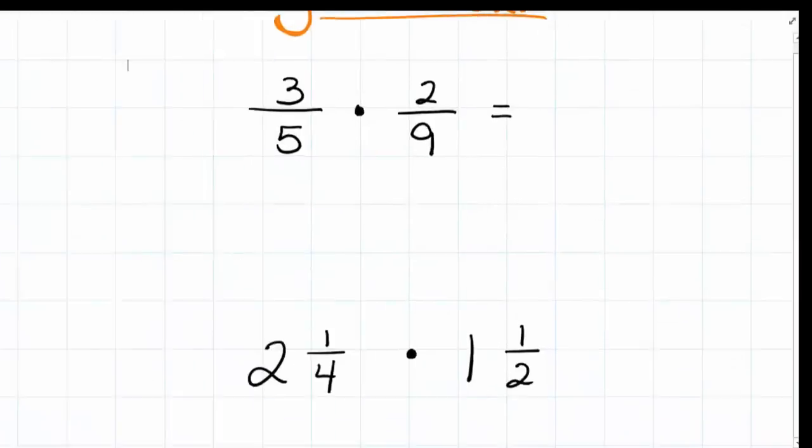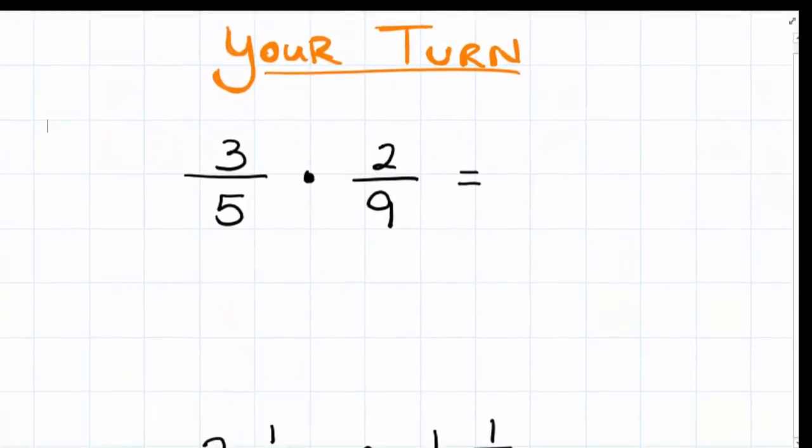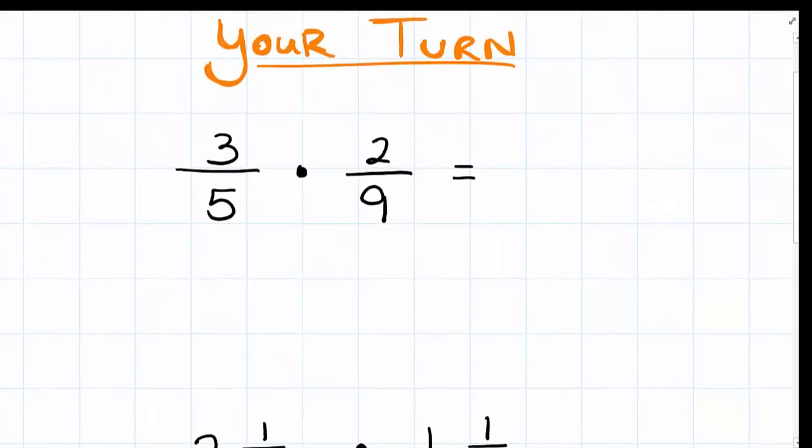So the first thing that I'm going to do is zoom in on 3 fifths times 2 ninths. And as I said previously, I'm going to look to reduce. Anything from the numerator can reduce anything from the denominator. Top to bottom, bottom to top. And what I see that can be reduced is I see a number that can divide into both 3 and 9 to make those numbers smaller. 3 can divide into 3 one whole time and 3 divides into 9 three whole times.